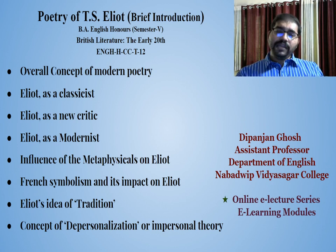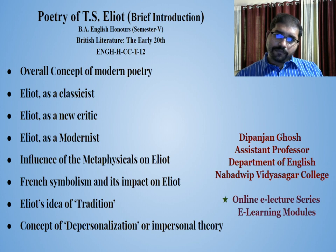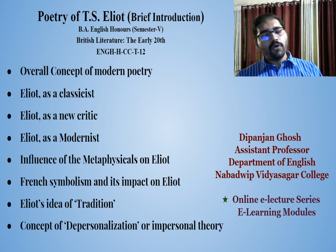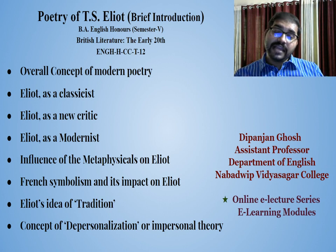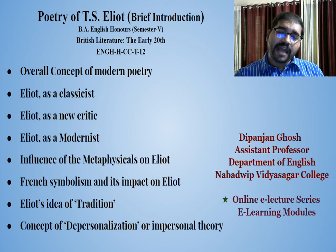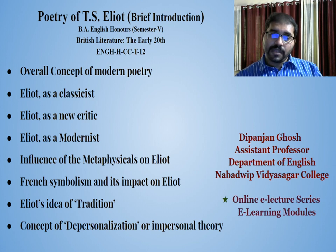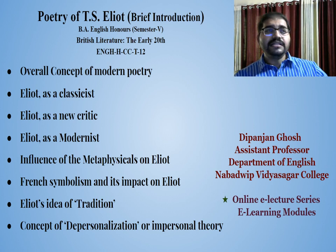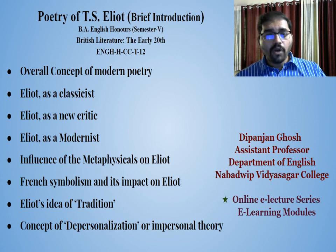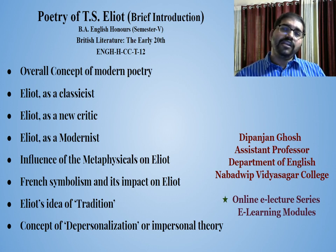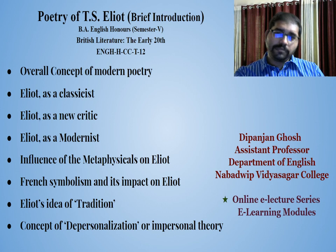Whenever we read modern poetry, we find that the modern period comes as a kind of antithetical representation of life in the form of poetry or literature — antithetical to the typical Romantic period. The Victorian period is generally considered as either a mere continuation of the Romantic age, or a particular kind of revolt against the Romantic age, or a transition towards the modern period.